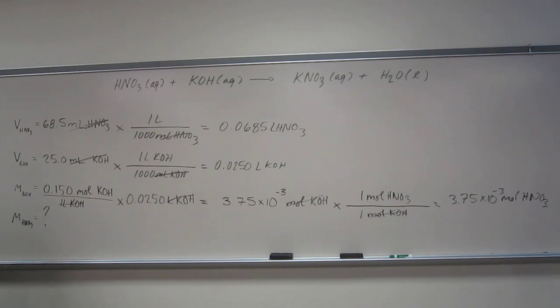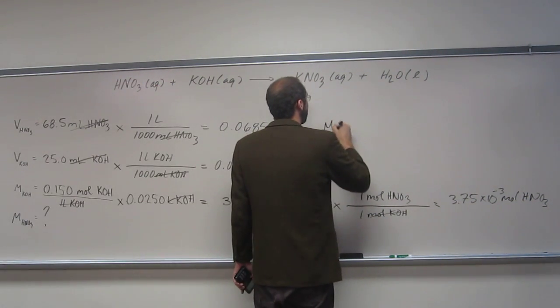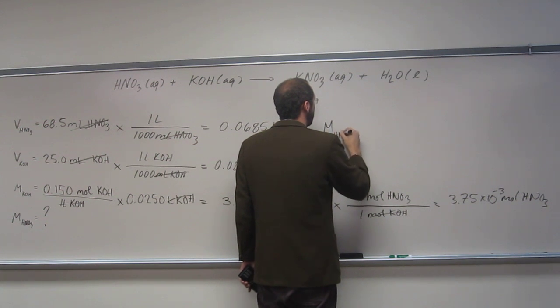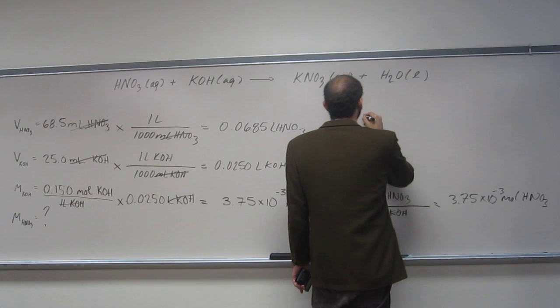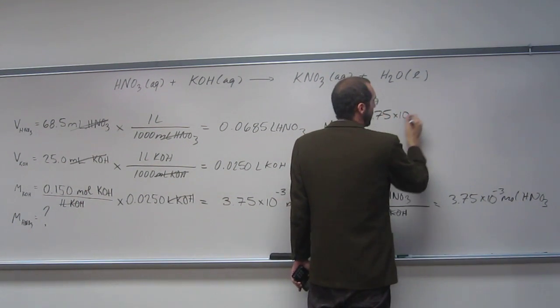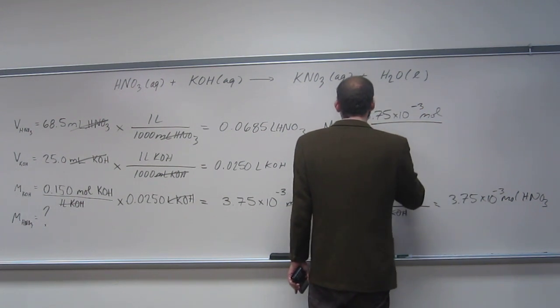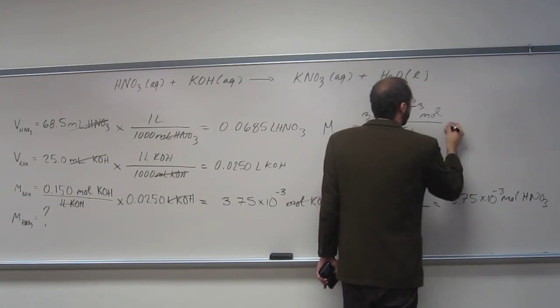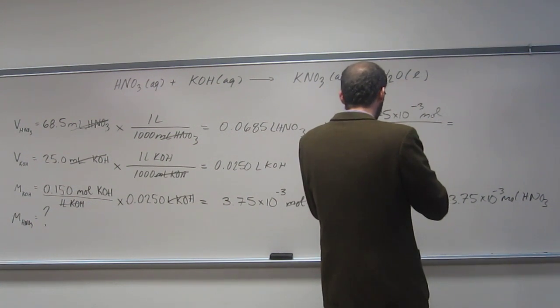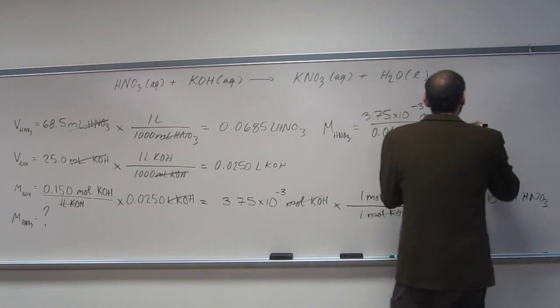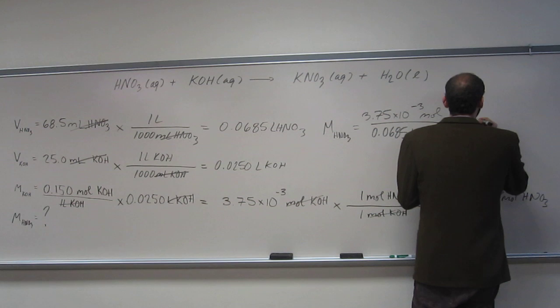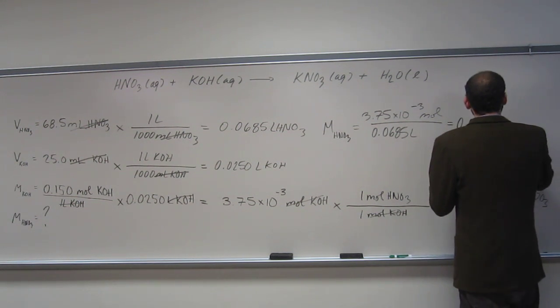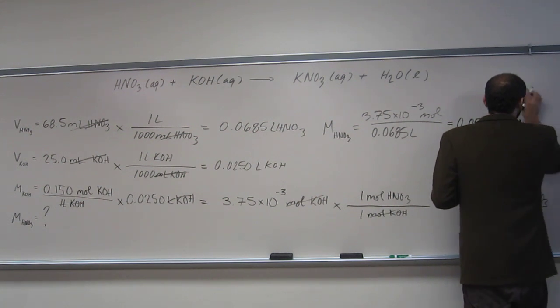So we've got the moles of nitric acid and we've got the liters of nitric acid. Should we be able to calculate the concentration? Yeah. So the concentration, the molar concentration of nitric acid is going to be the number of moles, 3.75 times 10 to the negative 3 moles of nitric acid divided by 0.0685 liters of nitric acid. And I got 0.0547 molar nitric acid.